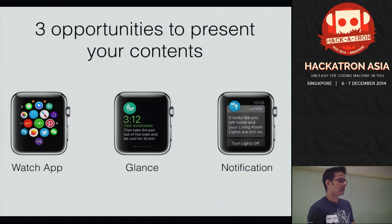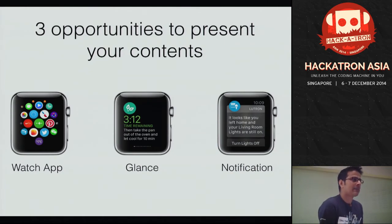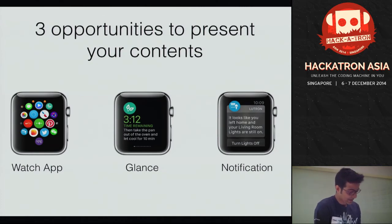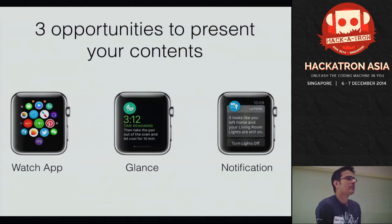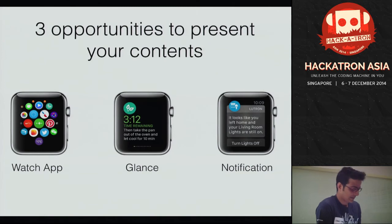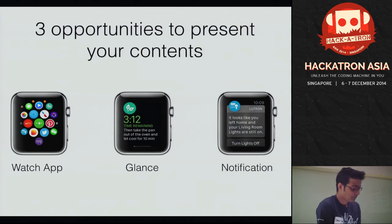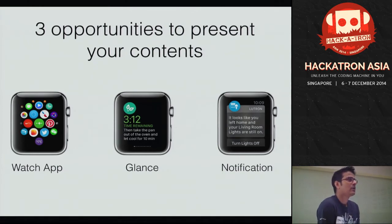Things like how many tweets you have, how many messages you have, or if you're using a fitness application, you can show how many calories you've burned. The main catch is that on glance you can't have any buttons. On the Watch app, if you present a lot of content, it will scroll — but the glance won't scroll. So whatever you need to present needs to fit within the screen of the Watch, and you can't have any buttons on the glance.